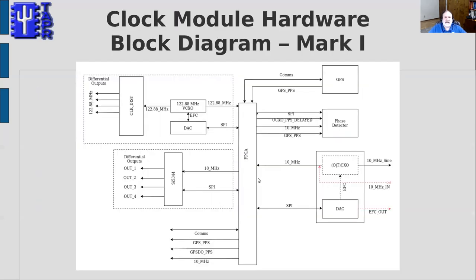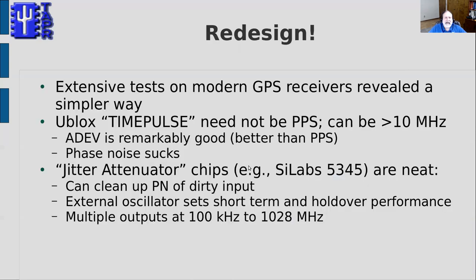This is a diagram of the MARC 1 clock module that I was working on last year. I won't spend more time on this other than to say it's complicated — it had an FPGA, which means lots of ugly programming. After working on that, I was testing some modern U-blox GPS receivers and we learned about a simpler way to do things.